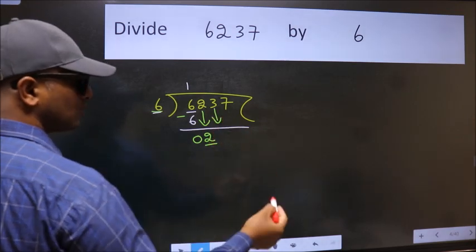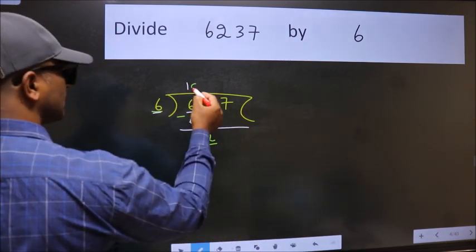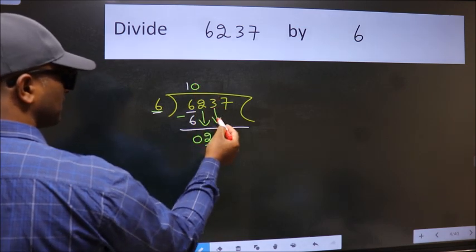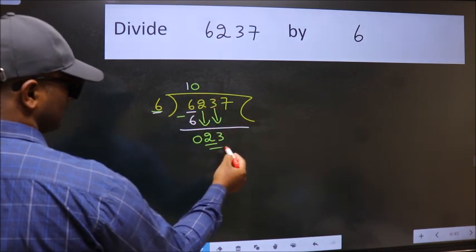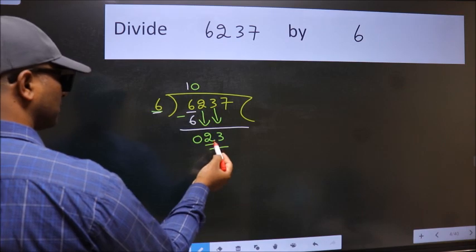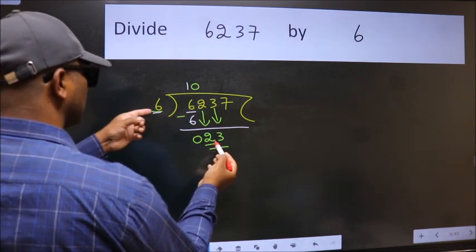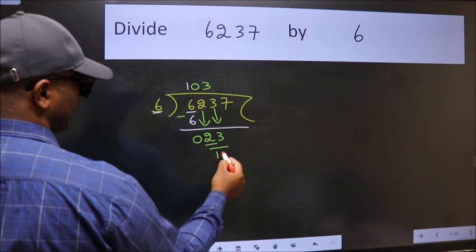And the rule to bring down the second number is put 0 here. Then only we can bring this number down. So 23. A number close to 23 in 6 table is 6 times 3 is 18.